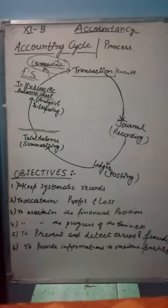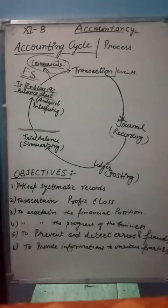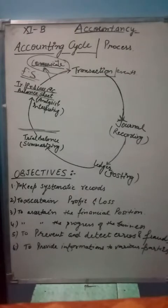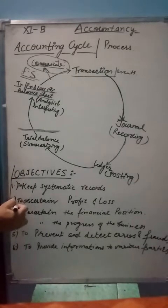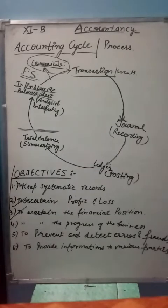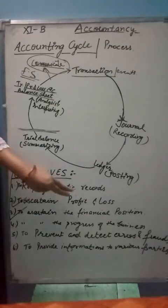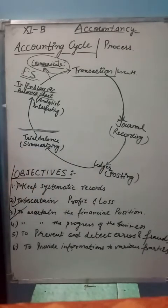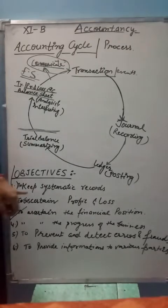A complete record of business transactions helps to avoid the possibility of omission and fraud. The next objective is to ascertain profit and loss. The main objective of businesses is to earn profits, so our main objective is to ascertain the profit and loss.